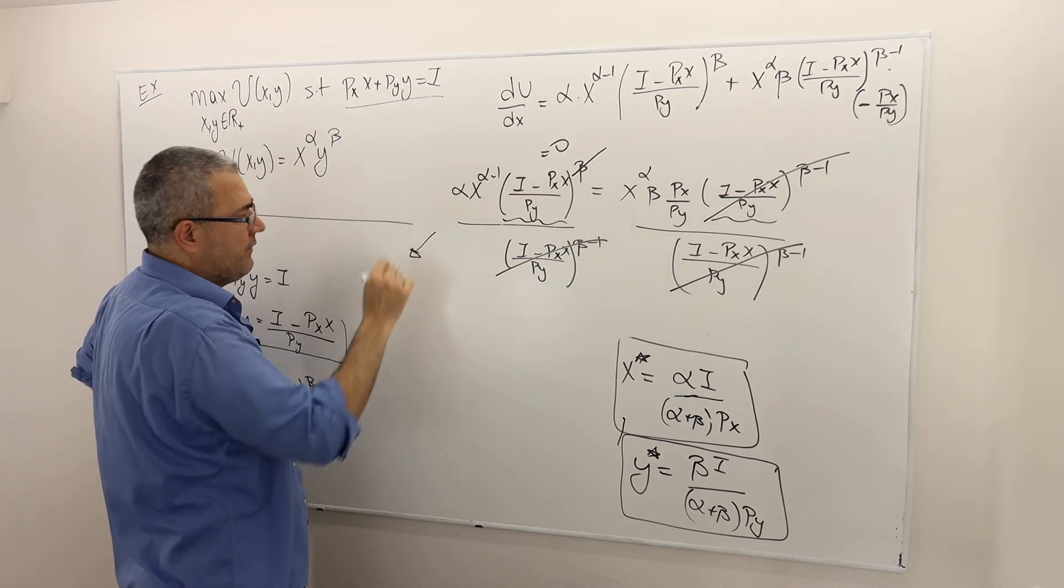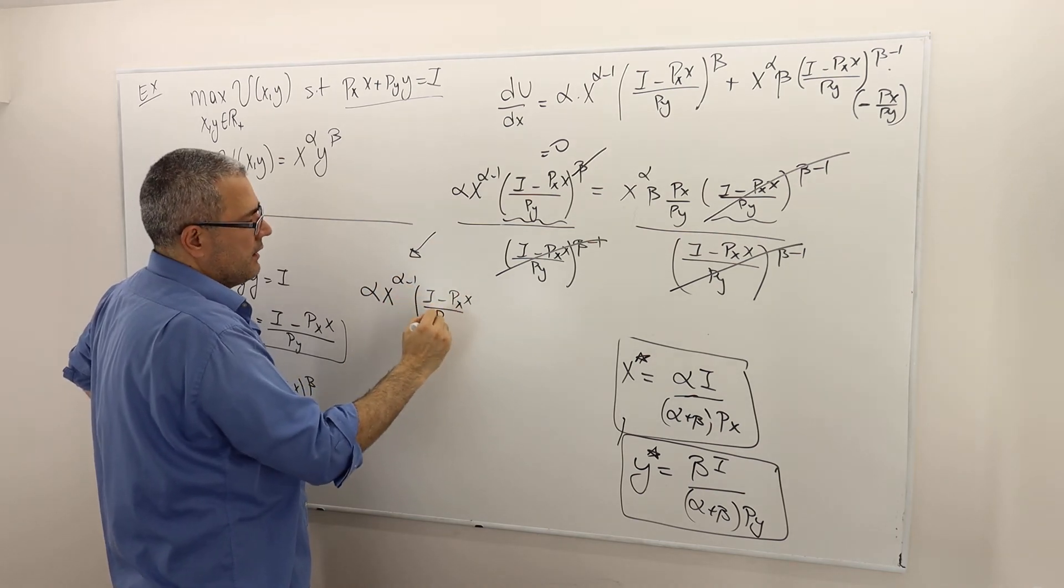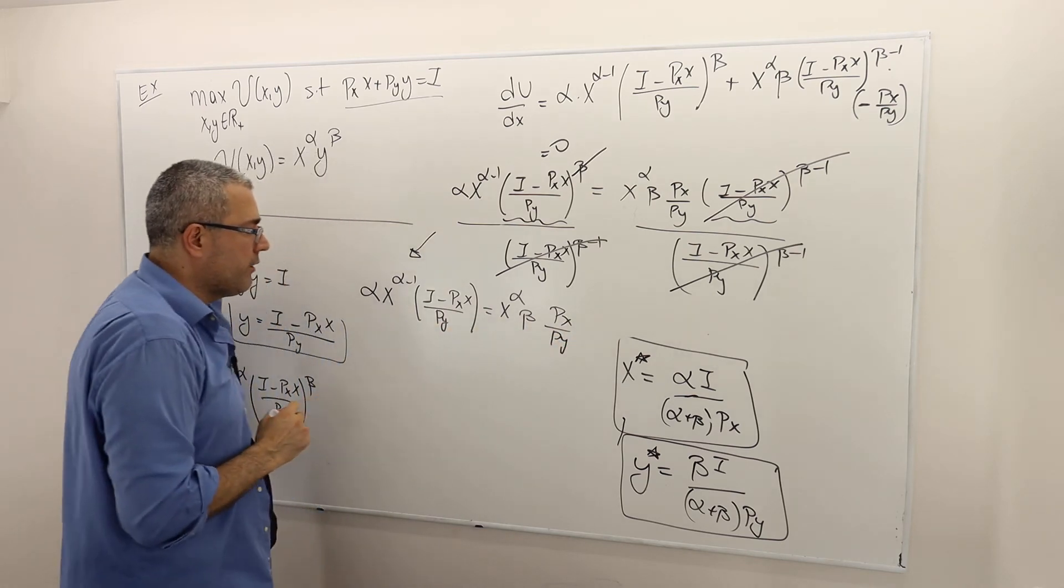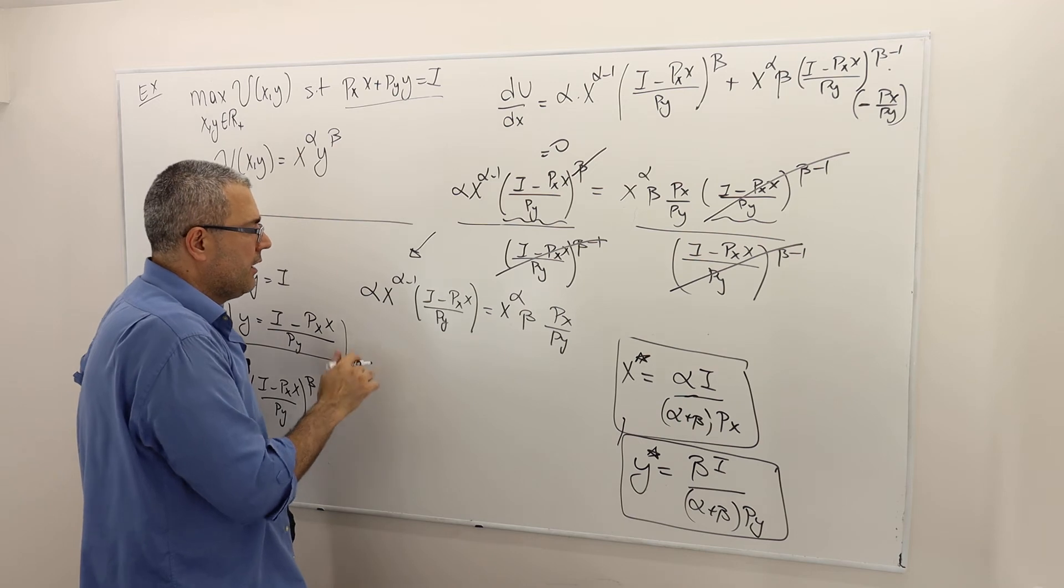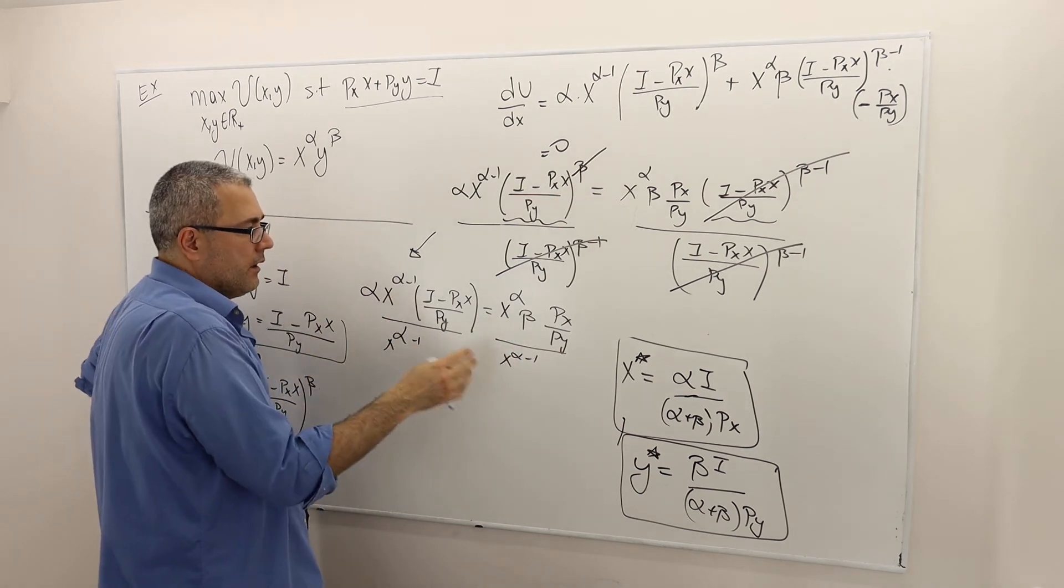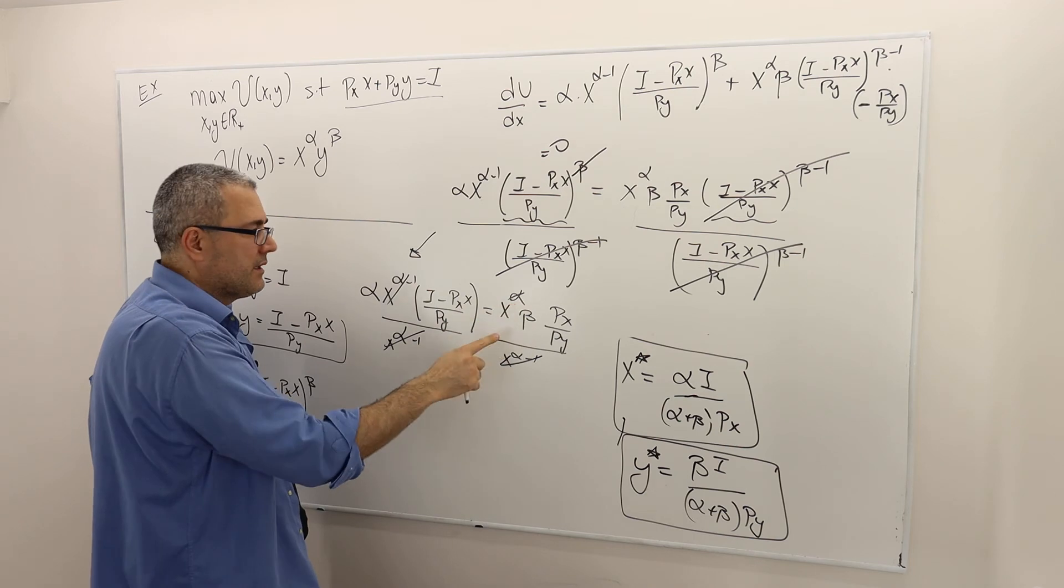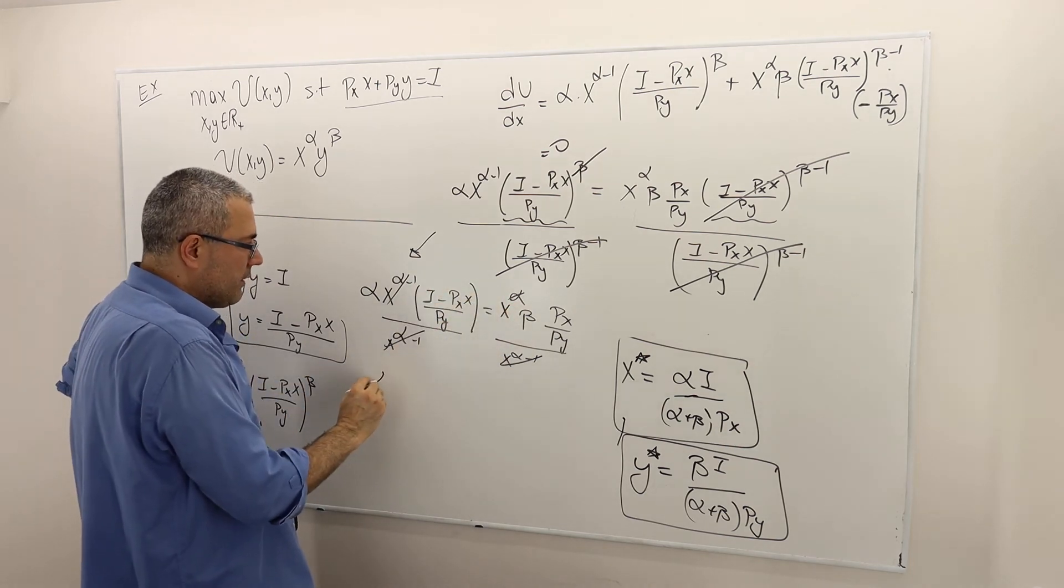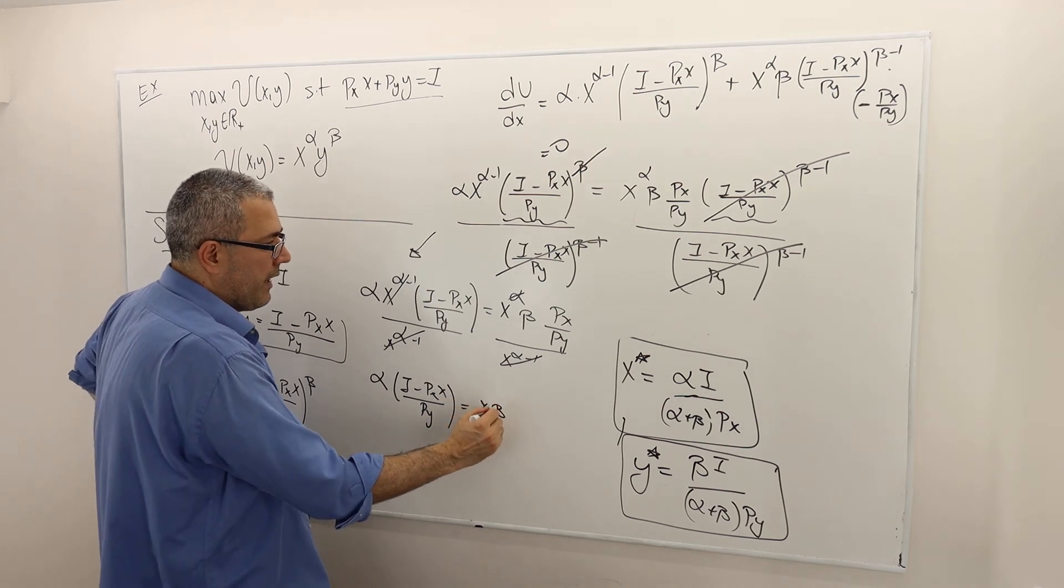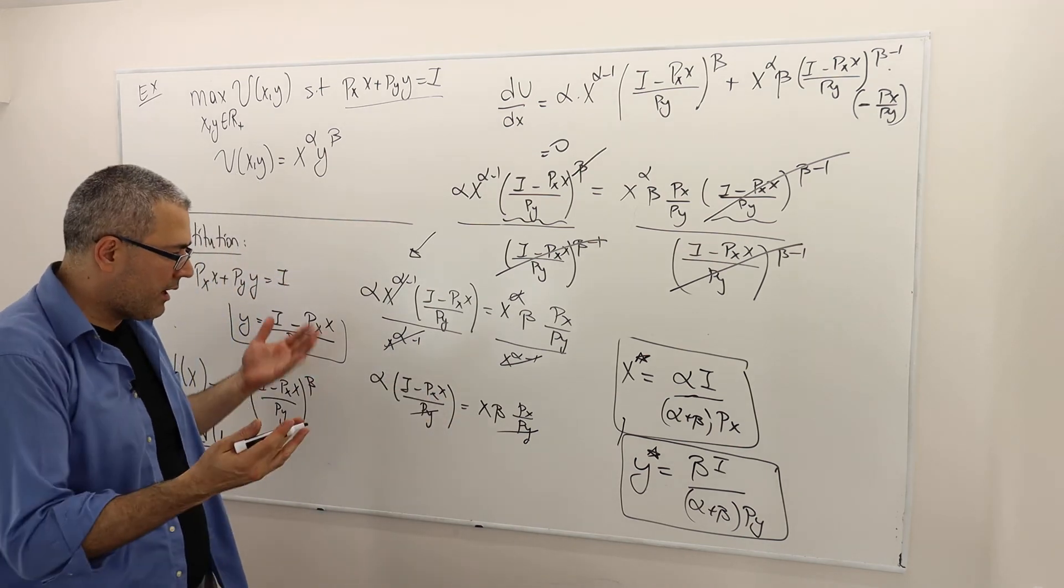So, let me continue here. What I have on the left-hand side, alpha X alpha minus 1 income minus PXX divided by PY equals X to the power alpha beta PX over PY. Very good. Well, we can do even more simplification. Divide both sides by X to the power alpha minus 1. So the equality will not change. So this and this cancels out. This and this alpha cancels out. 1 stays there. So this is X to the power 1, I mean. So that is equivalent to alpha I minus PXX divided by PY equals X beta PX over PY. So PYs are cancelled. I can multiply both sides by PY and so they're gone.